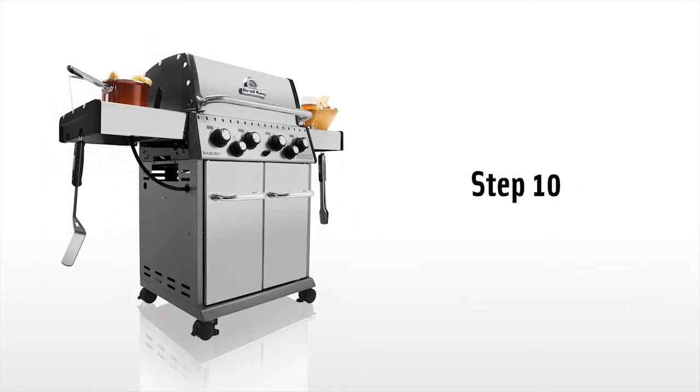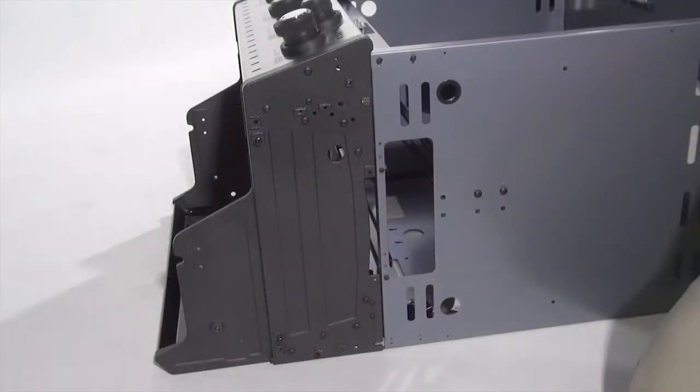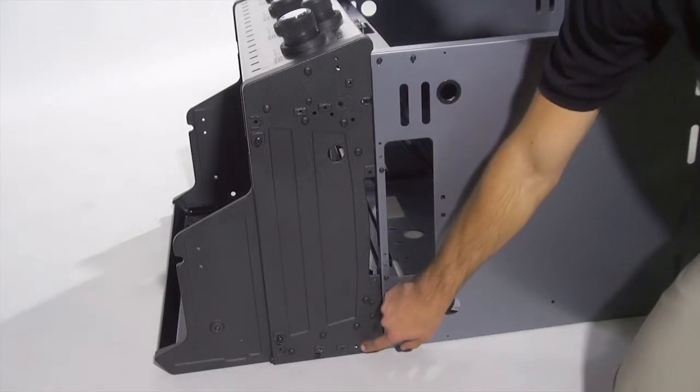Step 10. Attach the cabinet to the cook box assembly by using one screw on each corner of the cook box.